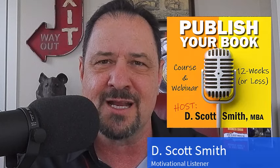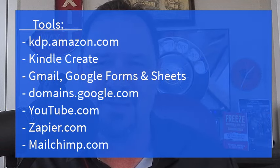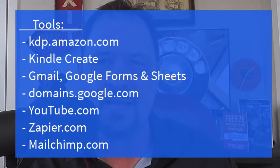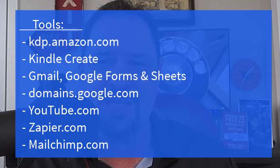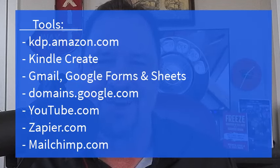Let's go through the tools you're going to need: kdp.amazon.com — that's Kindle Direct Publishing — set up an account there. You're going to download the Kindle Create program; this is where you'll format and upload your book. You'll also need Gmail, Google Forms, Google Sheets, Zapier.com, domains.google.com, and a YouTube channel.